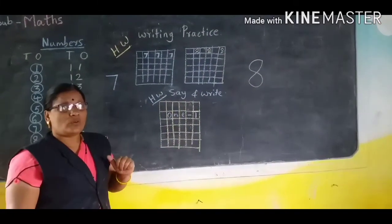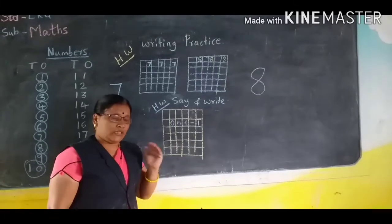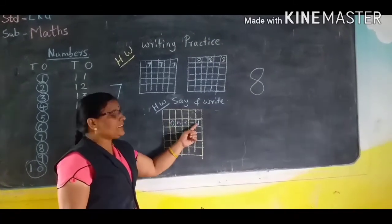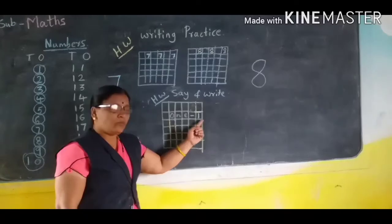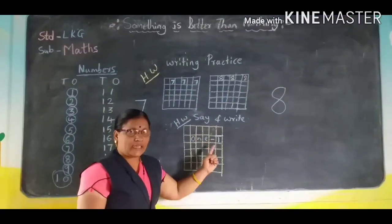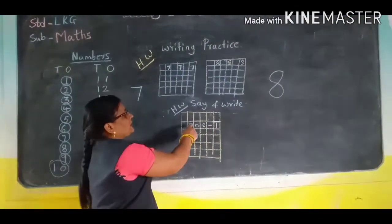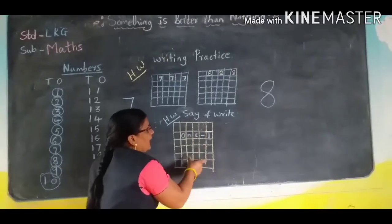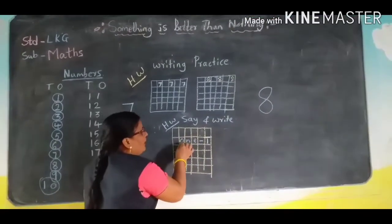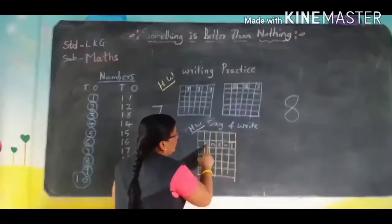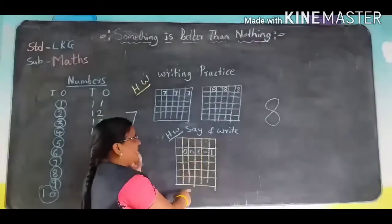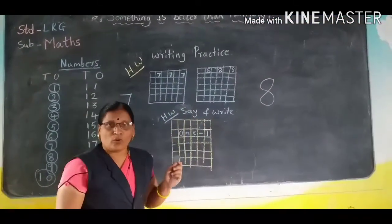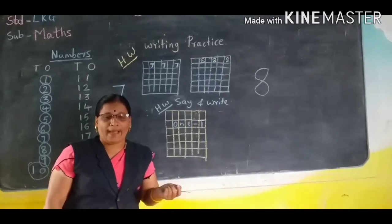Number name also necessary to learn. See here, what is the one spelling? O-N-E, one. What are the one spelling? O-N-E, one. I will write these three on our homework. Send me your homework back. Just you have to read the book.